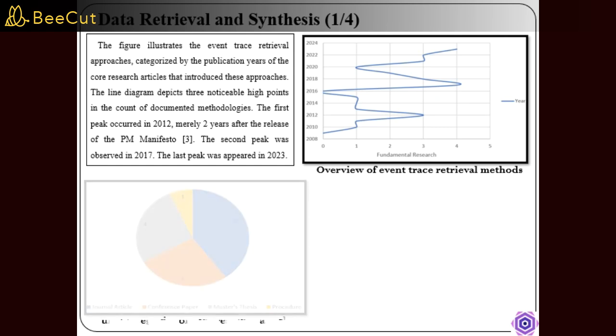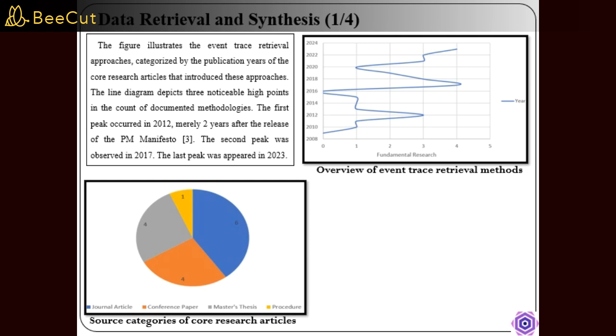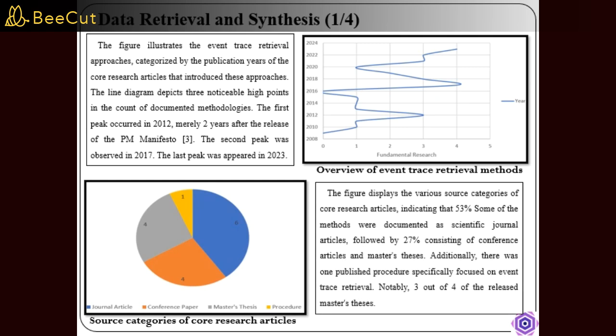The figure also shows source categories of core research articles: 53% from scientific journals, 27% from conferences, and master's theses.